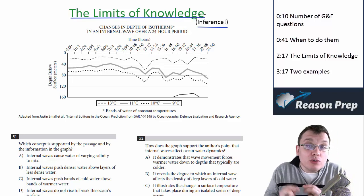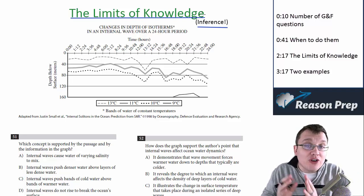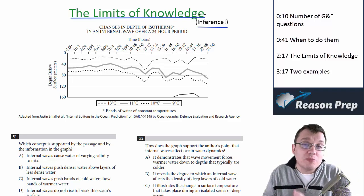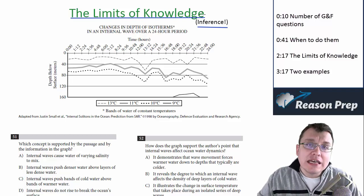And that's where the limits of knowledge come up. The graph can tell you certain things, but on other issues, even if the passage has to do with it, the graph itself on other issues may not be able to speak to it at all. So let me show you what I mean by that in two of the questions that we did in the previous passage.